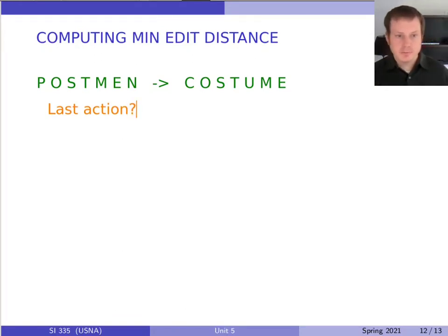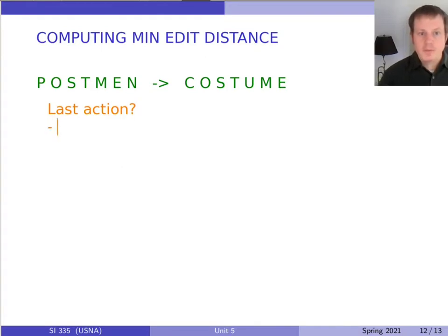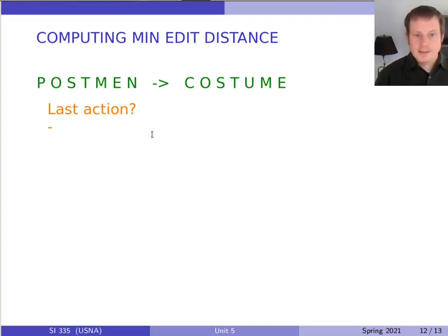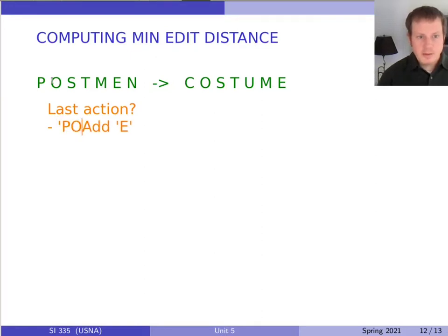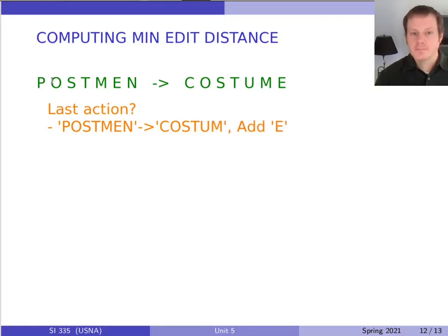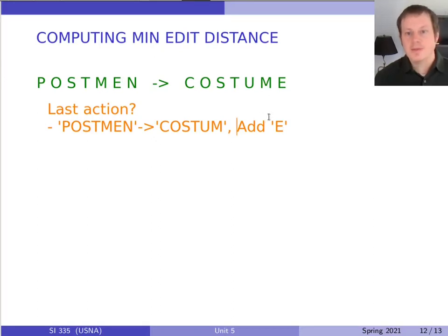So what could the last action be if we're turning 'postman' into 'costume'? Well, there are really three things it could be. One is to add the last letter of 'costume' — so the last action could be to add an 'e' at the end of 'costume.' If we do that last, then before that we must have turned 'postman' into 'costum', and then we add the 'e'.